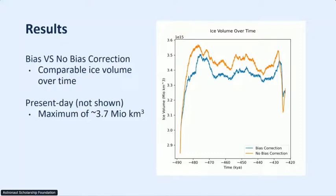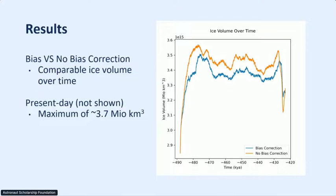This is our first bit of data. The plot on the right shows ice volume over time for the entire Greenland ice sheet. The main takeaway is that ice volume over time was fairly consistent between our bias-corrected and non-bias-corrected models, which is great — it means we're doing something right. For reference, our present-day ice sheet model would be above our upper threshold here, with a volume of about 3.7 million kilometers cubed.